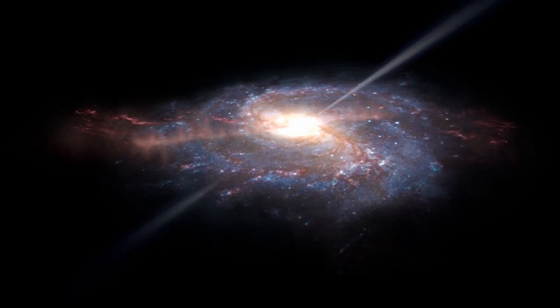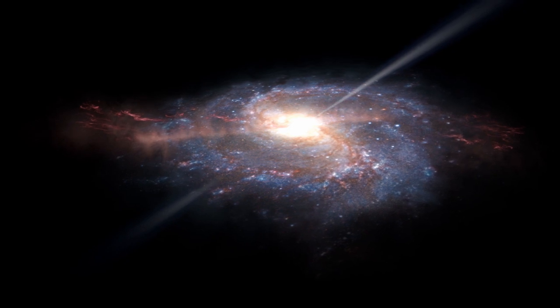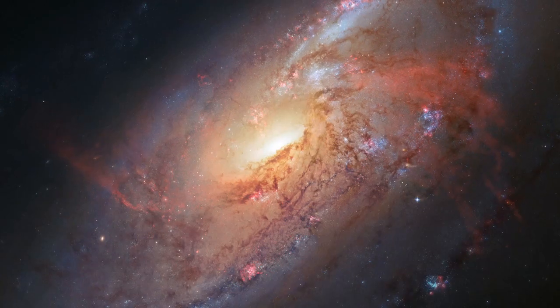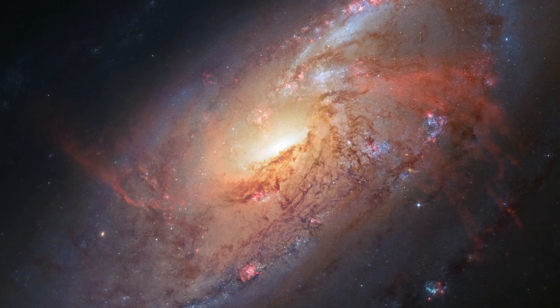However, the looser gas further out is blown away from the jets, so that it curves out of the galactic plane, creating the arching red arms seen in this image.